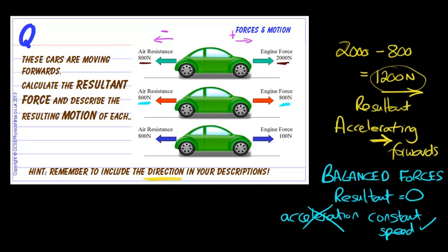Let's take a look then at the last case where we've got the car which has now got a forwards engine force of 100. The engine is perhaps idling, haven't got the foot on the pedal and we've got an air resistance force of 800 because this car is moving forwards. The air resistance is still there but perhaps the engine has just lost power.